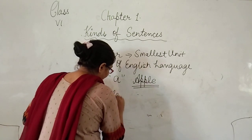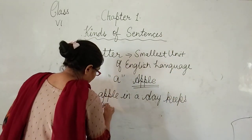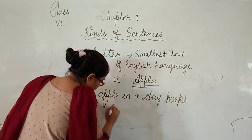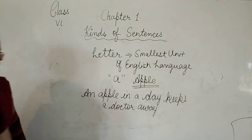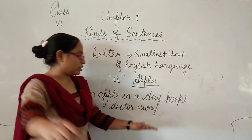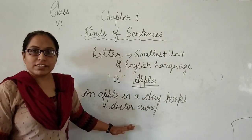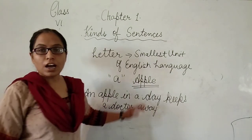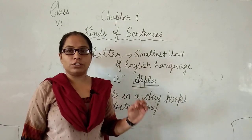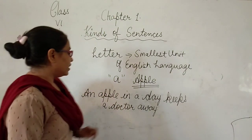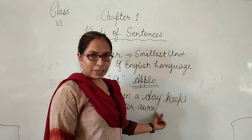And when a group of words makes a complete sense and has a meaningful thought, that is called a sentence. For example: 'An apple a day keeps a doctor away.' This sentence has a group of words as well as a meaningful thought or clear statement. So a sentence is a group of words which has sense, meaningful thought, or a clear statement. Sentences always begin with a capital letter and end with a punctuation mark.